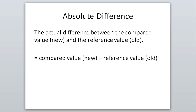Within percents there are a couple of vocab words we need to know. The first one is the absolute difference between two values. The absolute difference just tells us the actual quantity between them — the actual amount that two values differ by. We write this as new value minus old value to physically see how much change there is — how much it either went up or down.